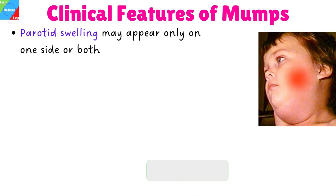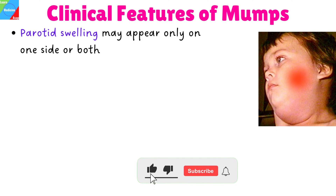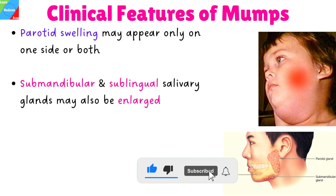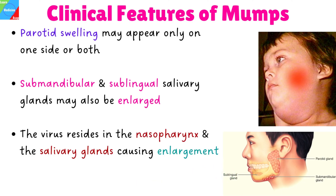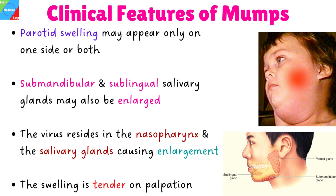Parotid swelling may appear only on one side or both. Submandibular and sublingual salivary glands may also be enlarged. Following transmission of the mumps virus, the virus resides in the nasopharynx and the salivary glands causing them to enlarge. The swelling is tender on palpation.